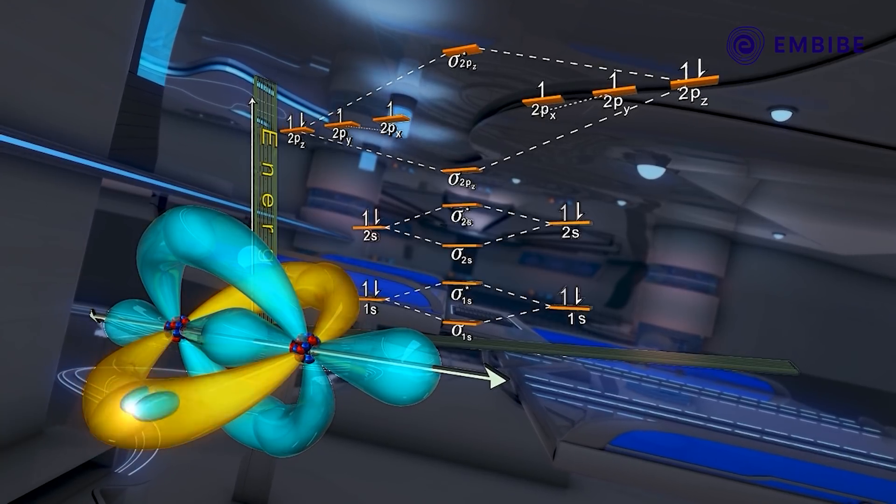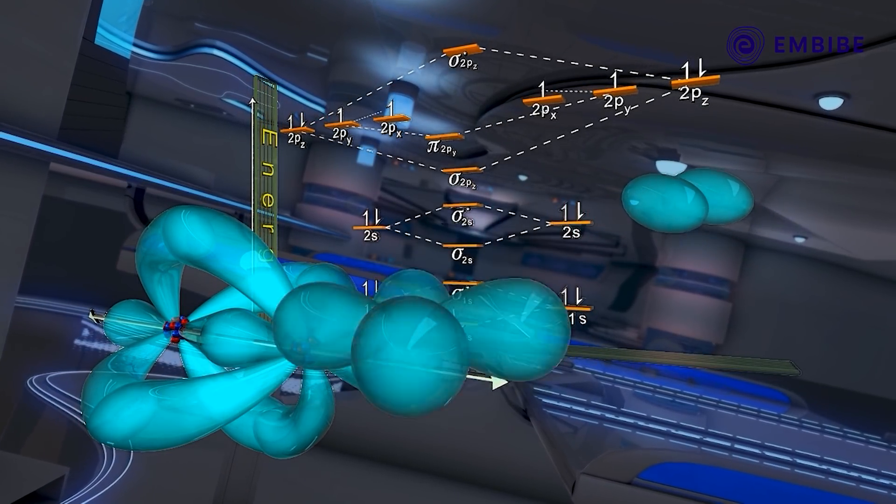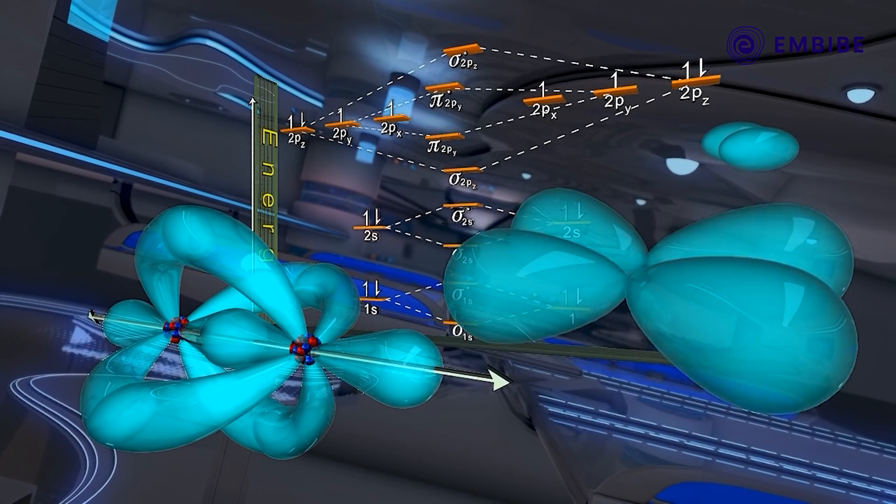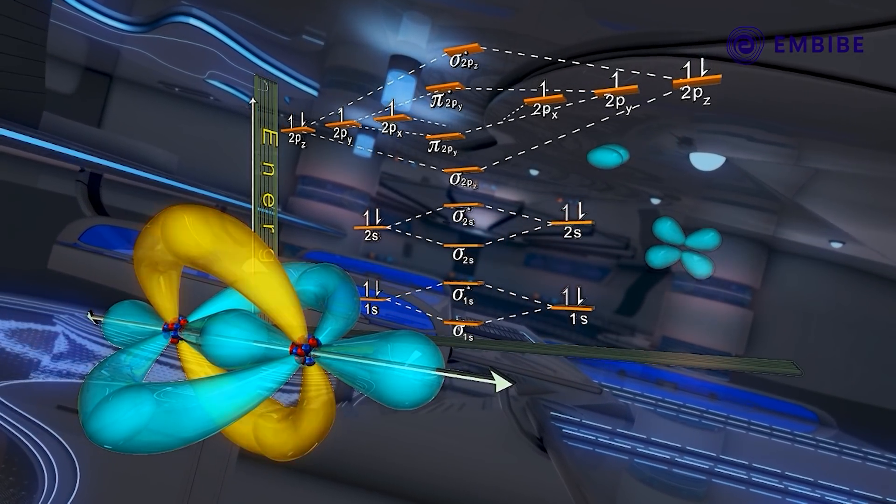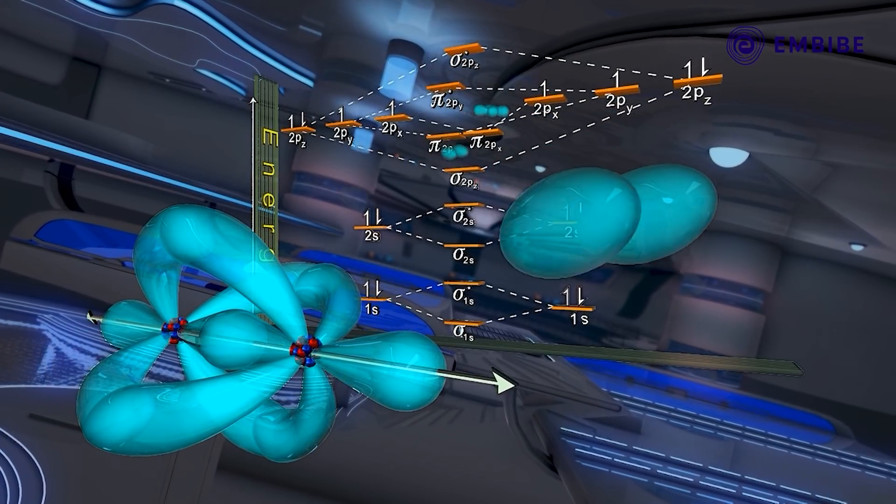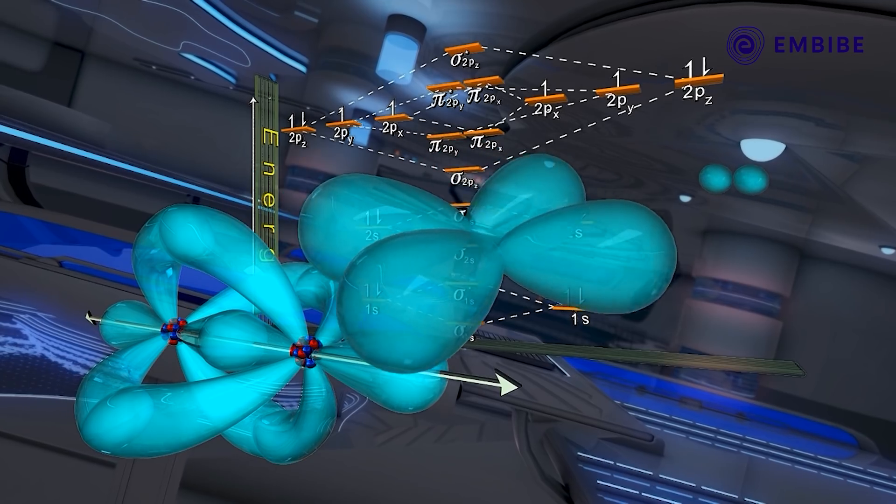The 2py orbitals form bonding π2py and anti-bonding π*2py orbitals. Similarly, the 2px orbitals form bonding π2px and anti-bonding π*2px orbitals.